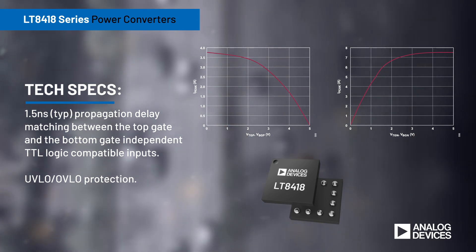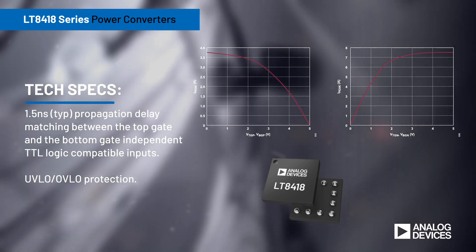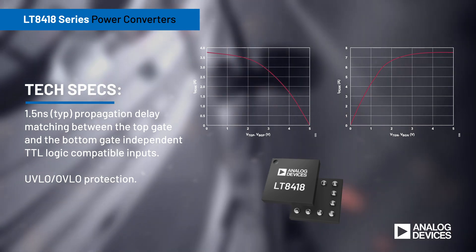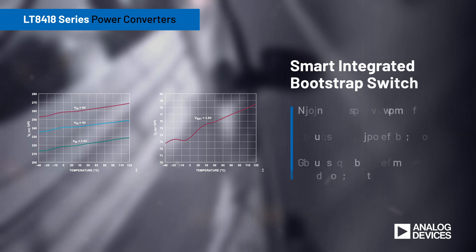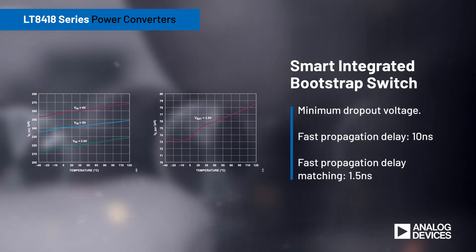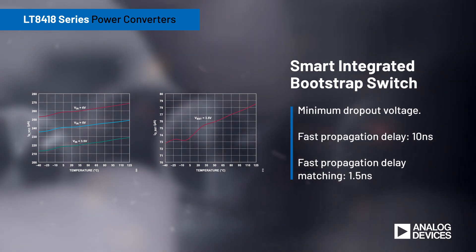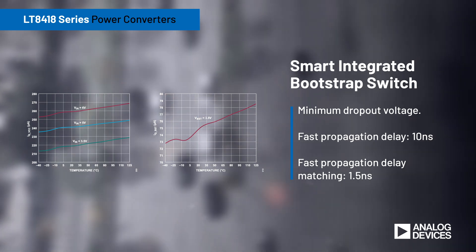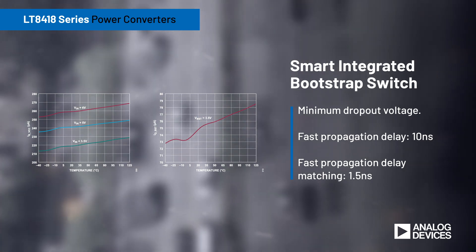The undervoltage and overvoltage lockout functionality offers additional protection for the external GaN FETs. A smart bootstrap switch maximizes regulator efficiency with minimum dropout voltage, ensuring operation within the maximum ratings of the GaN FET.